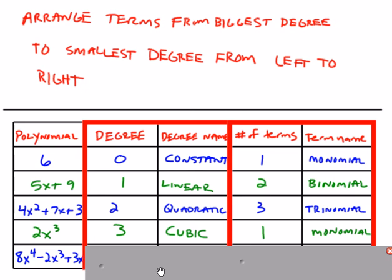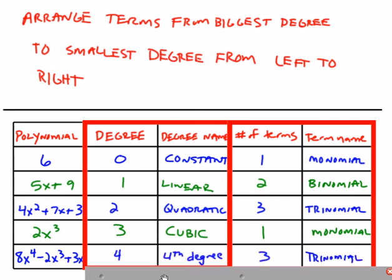And on the last one, the biggest exponent is four, which does have a name. It's called quartic, but that name is not used very often. So for our purposes, we can just use fourth degree. And there's three terms, so this would be a fourth degree trinomial.